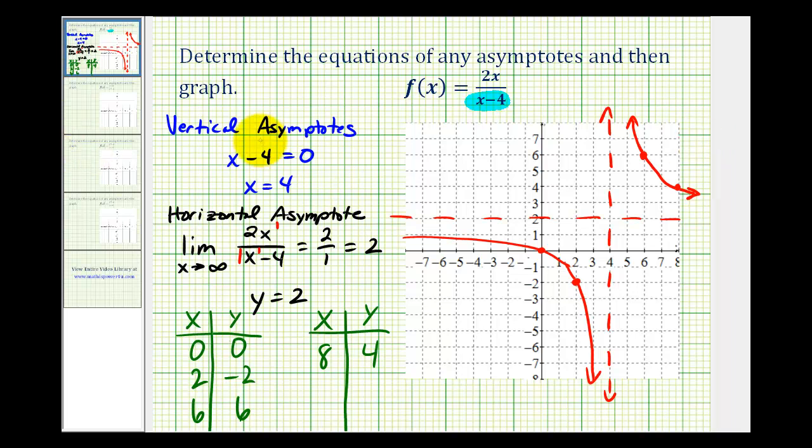Once we determine the horizontal and vertical asymptotes, it's just a matter of selecting convenient values of x to determine additional points on the function. And then knowing the graph is going to approach the asymptotes makes graphing most rational functions fairly straightforward.